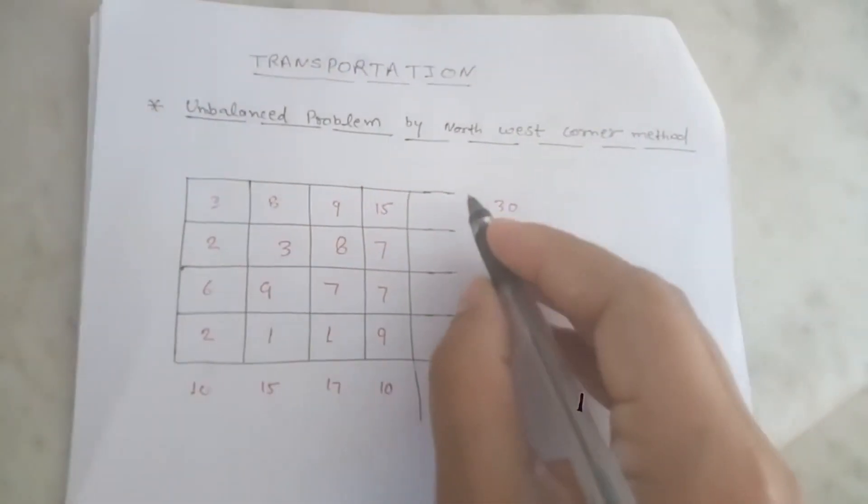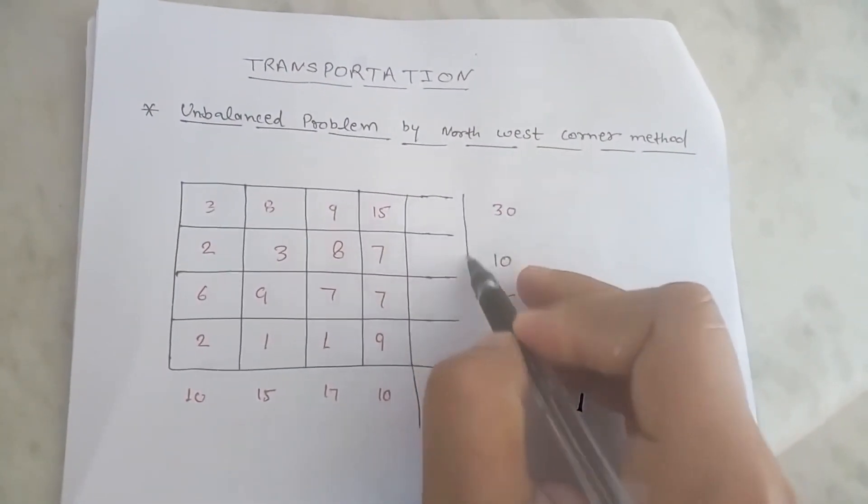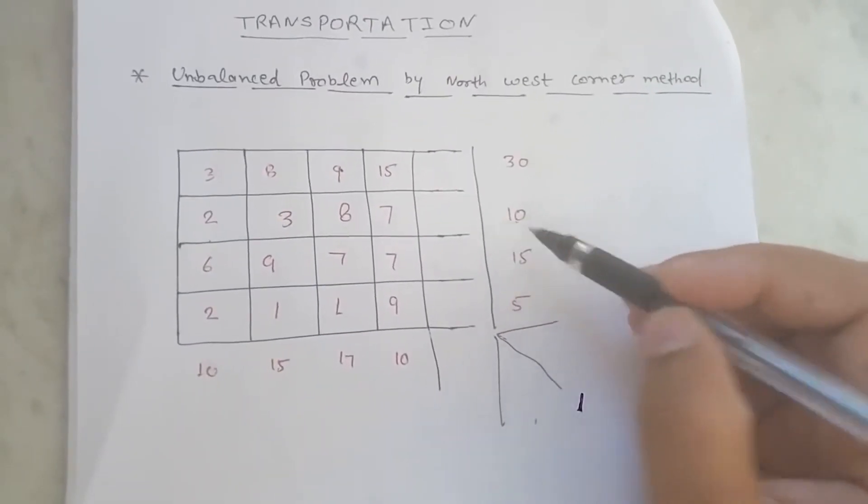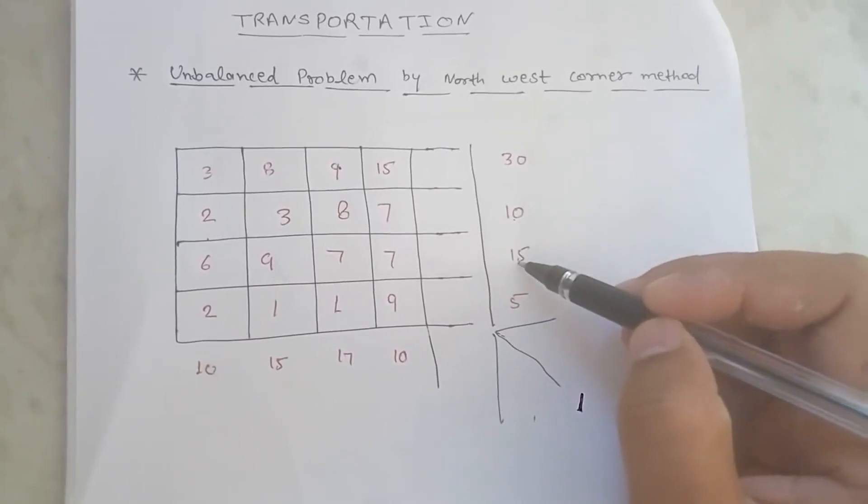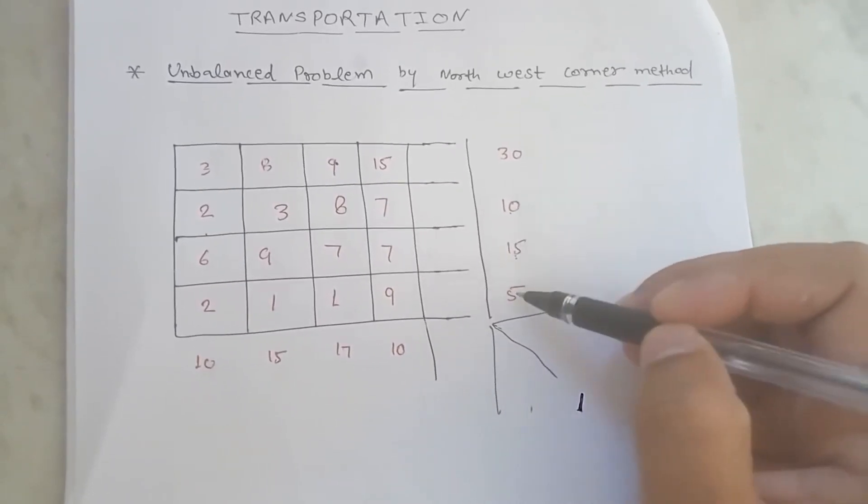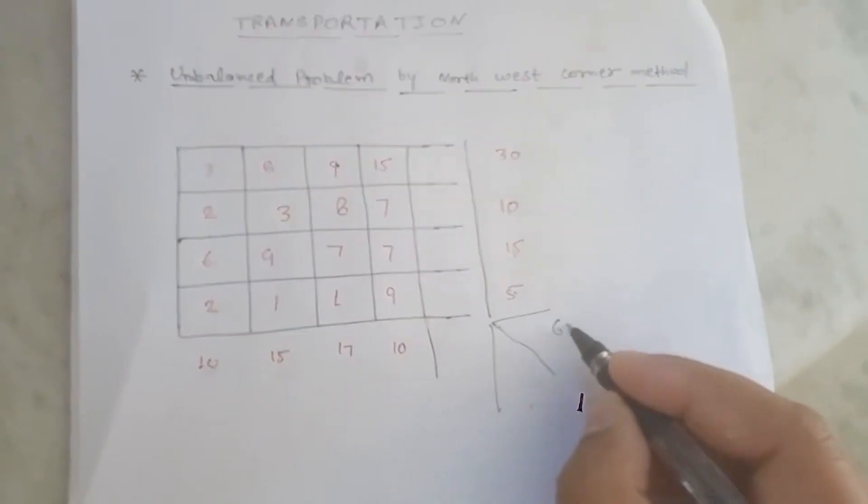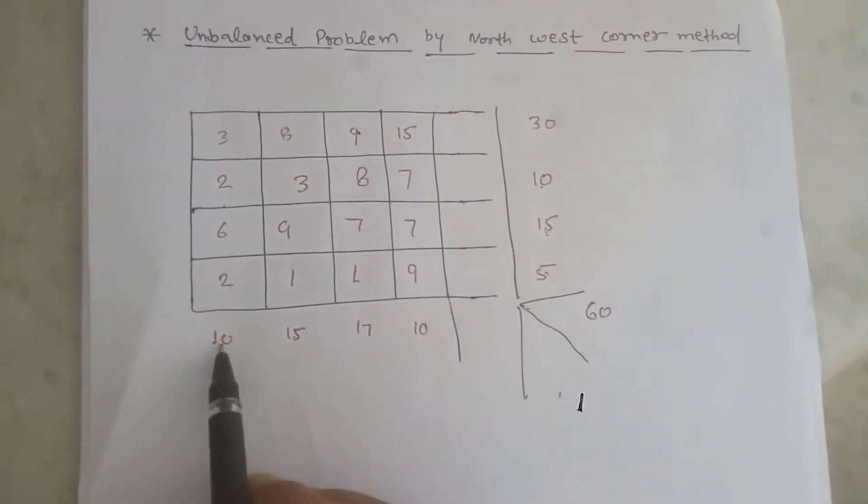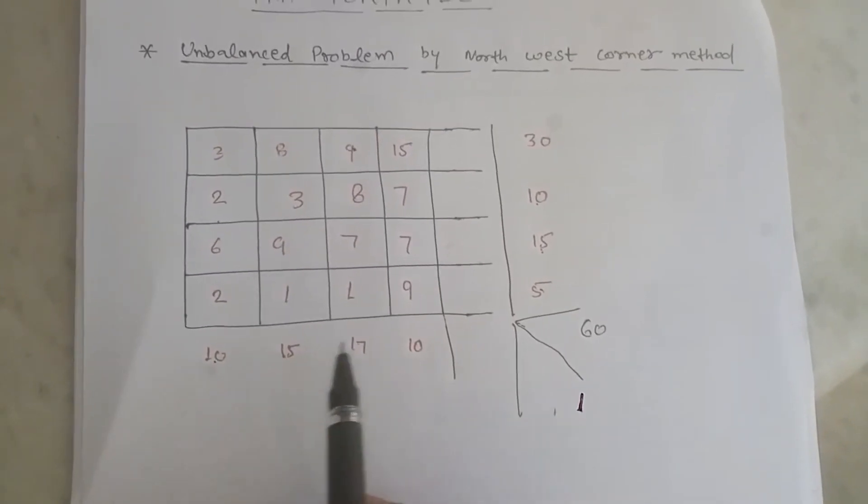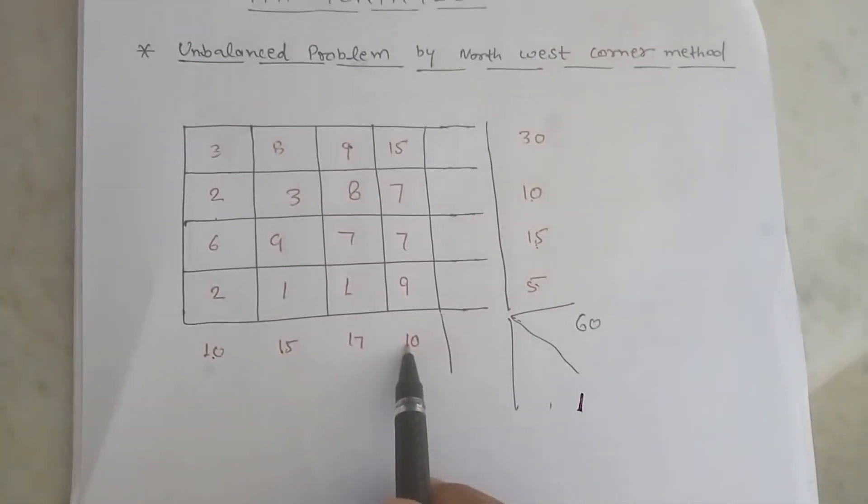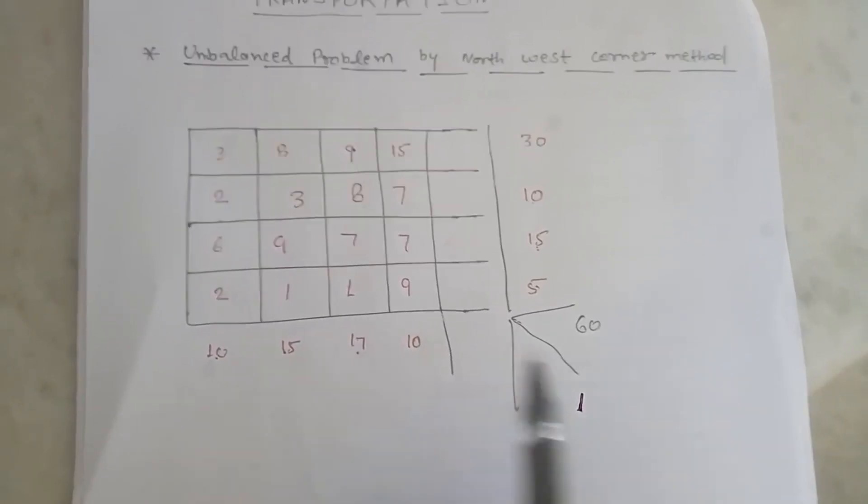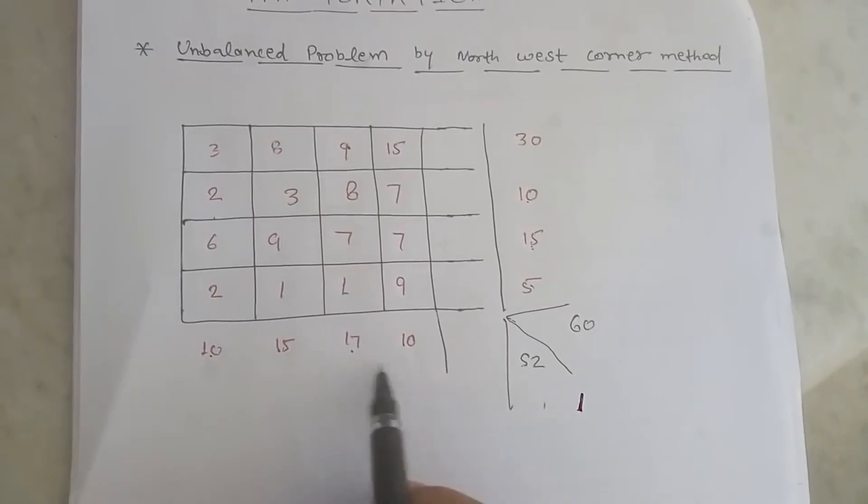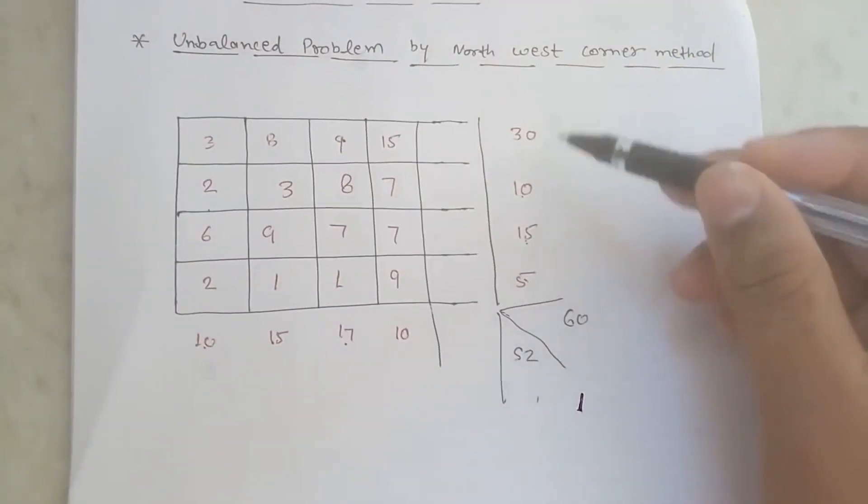The first step, we have to check ai value and bj value. So ai is equal to bj means it is a balanced transportation problem. Now check: 30 plus 10 plus 15 plus 5 is equal to 60. Here in bj: 10, 15, 17, and 10, so total is 52. So it is not balanced. ai is 60 and bj is 52.